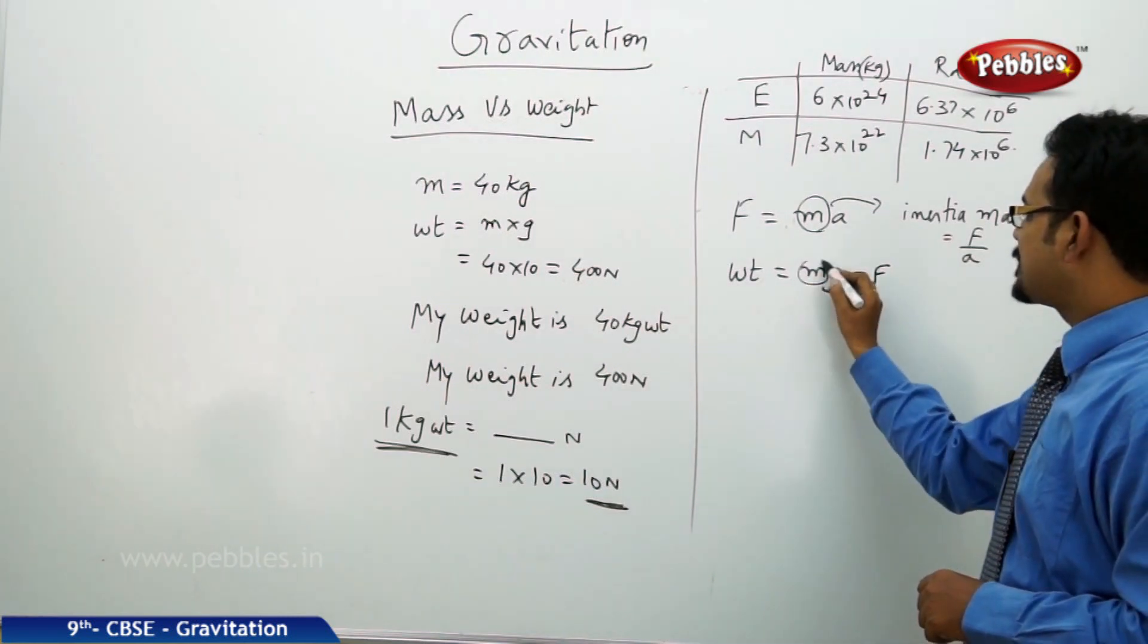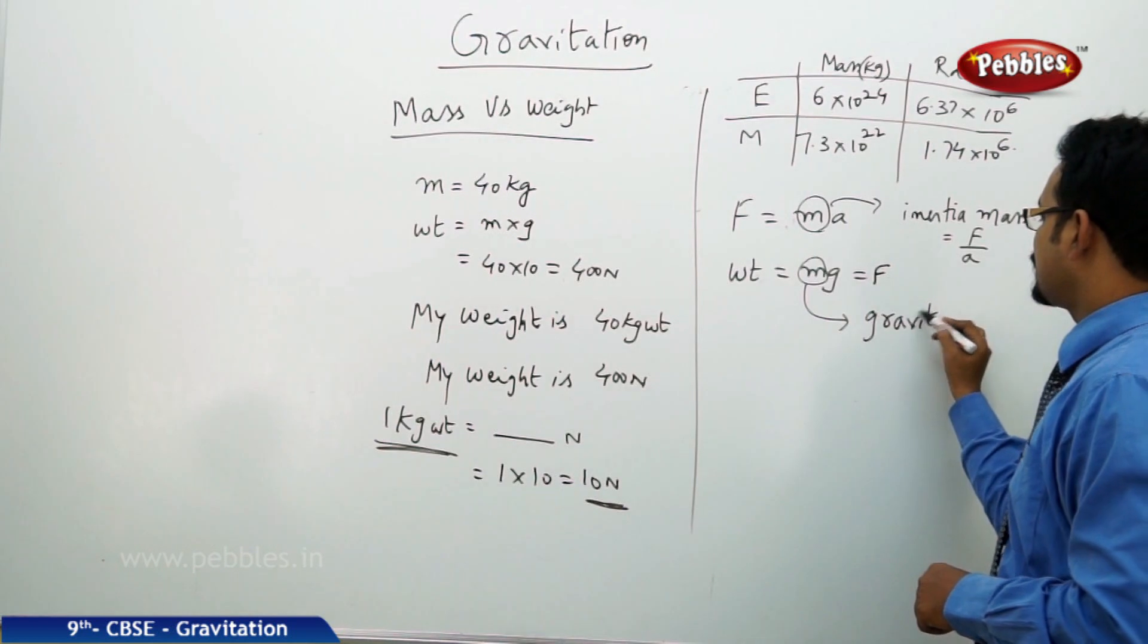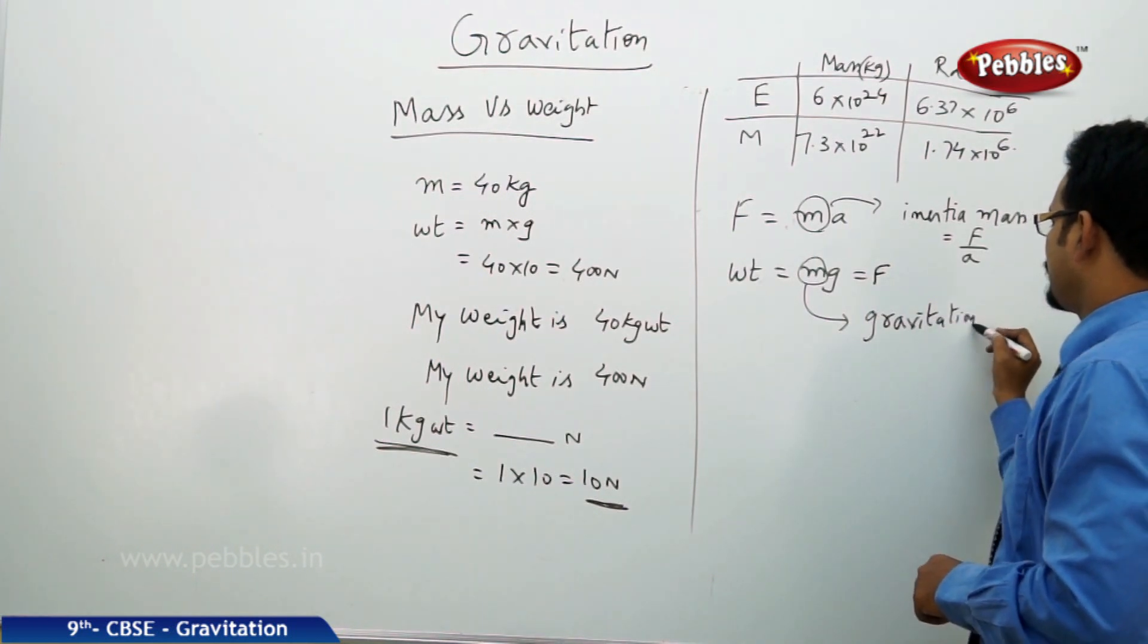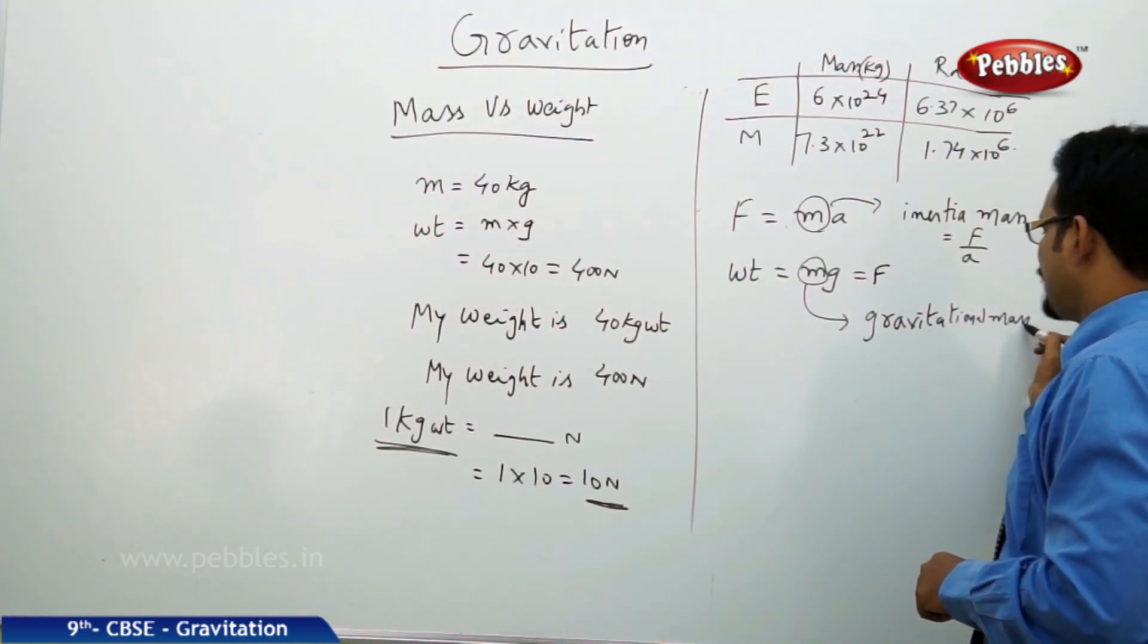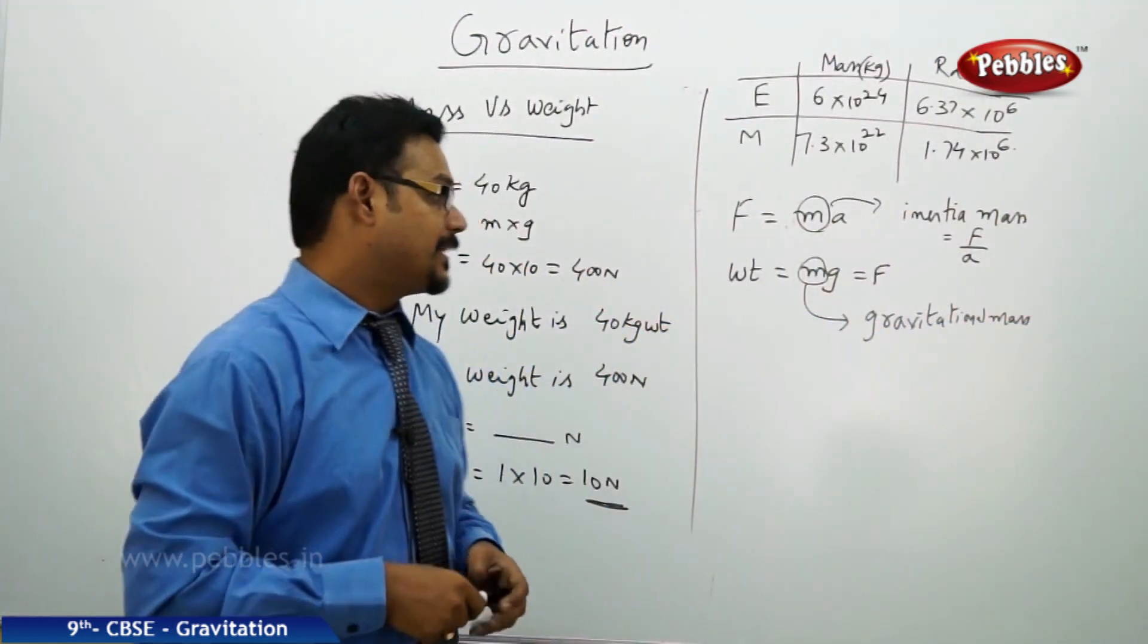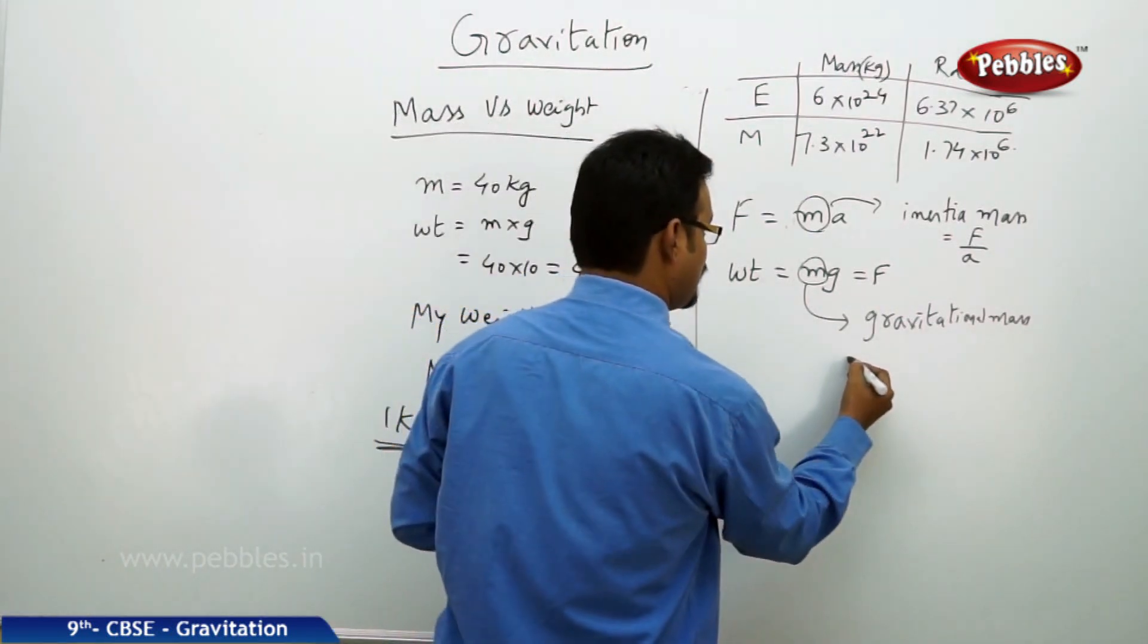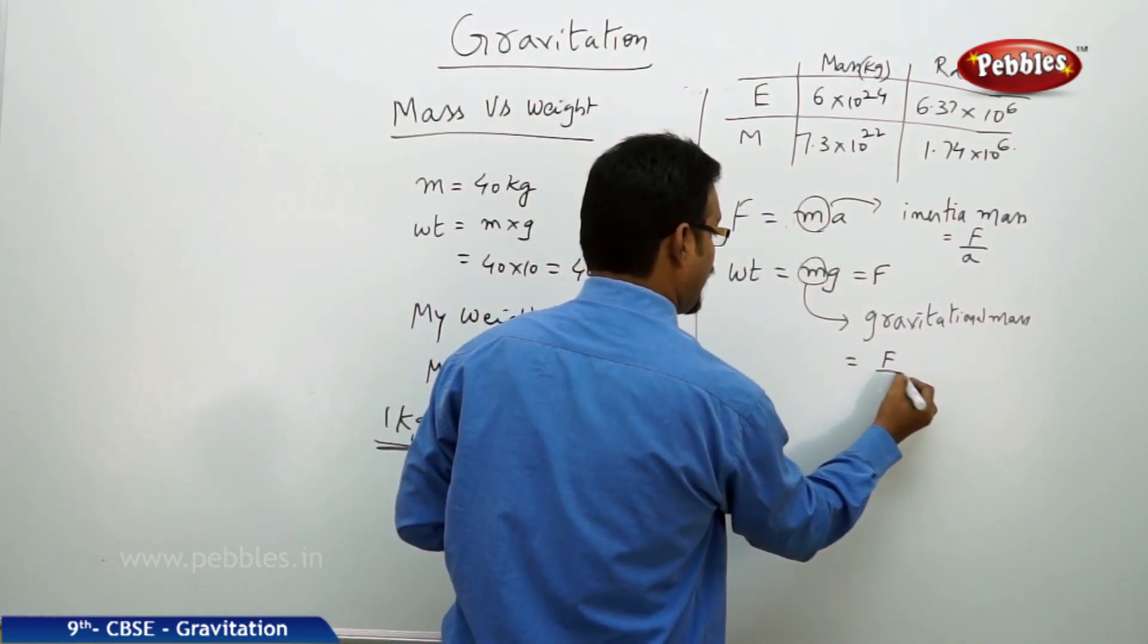Now coming to weight equal to mg, in this case this m is called gravitational mass because this m is involved in the gravitational force or the weight of the body. So in that case, the gravitational mass is F by g.